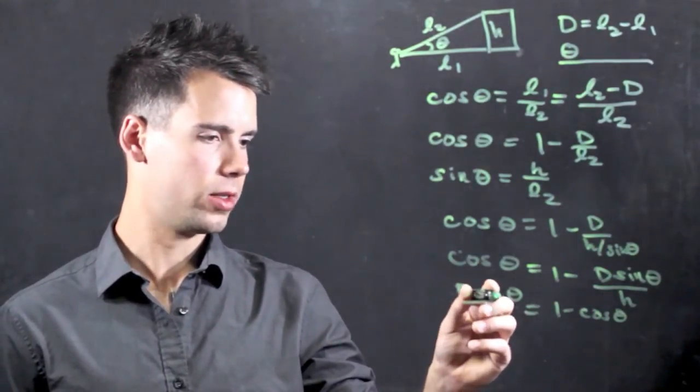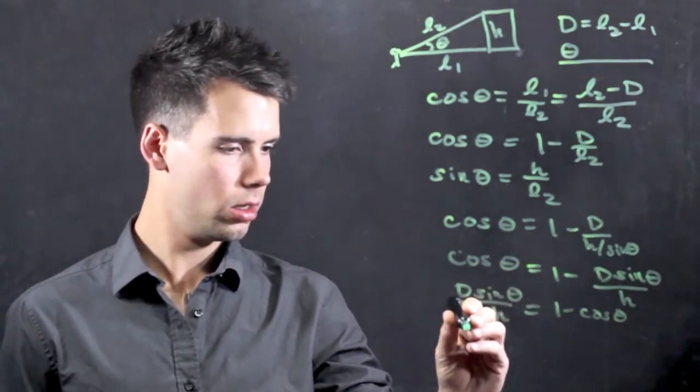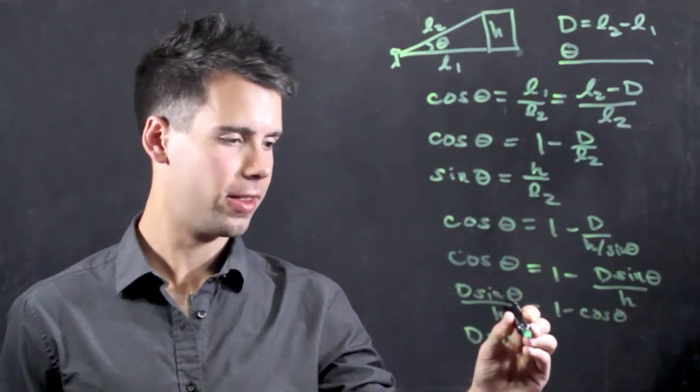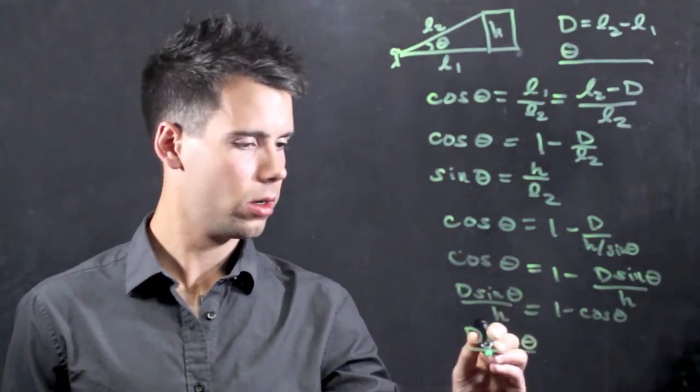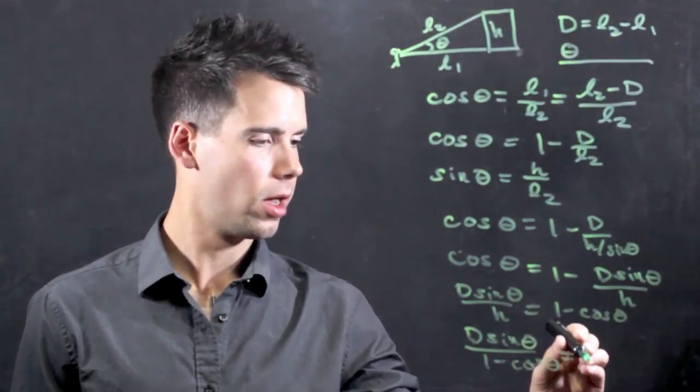Now if we solve for H, we can simply multiply both sides by H, and we get d times sine theta over 1 minus cosine theta is equal to the height.